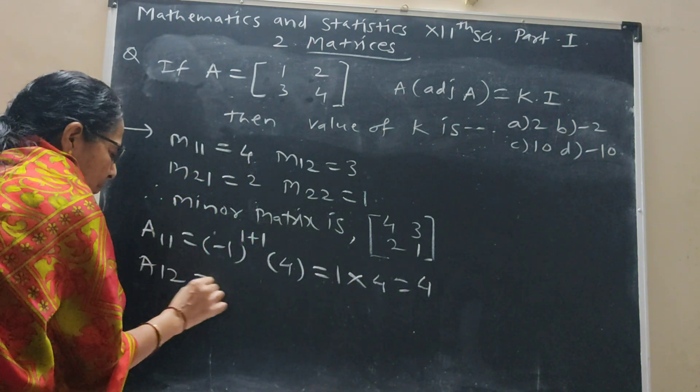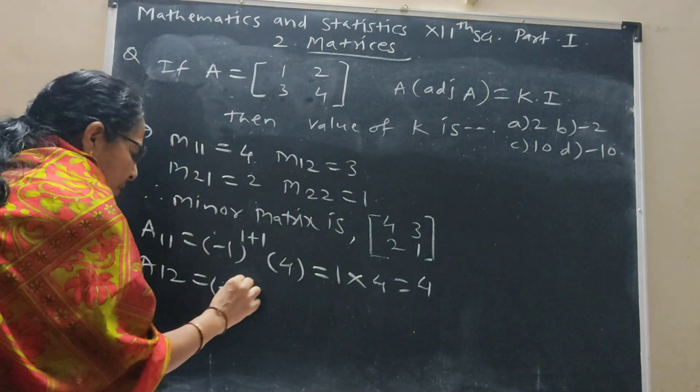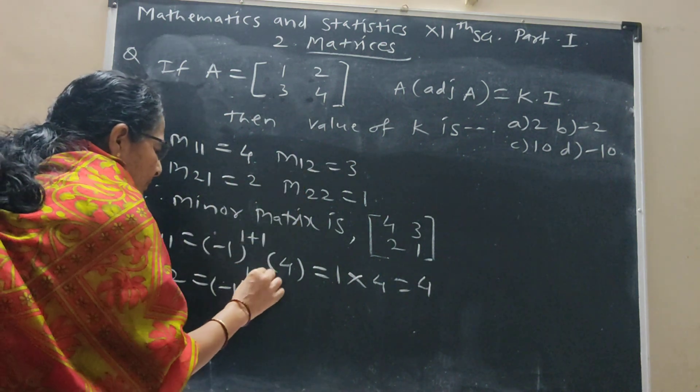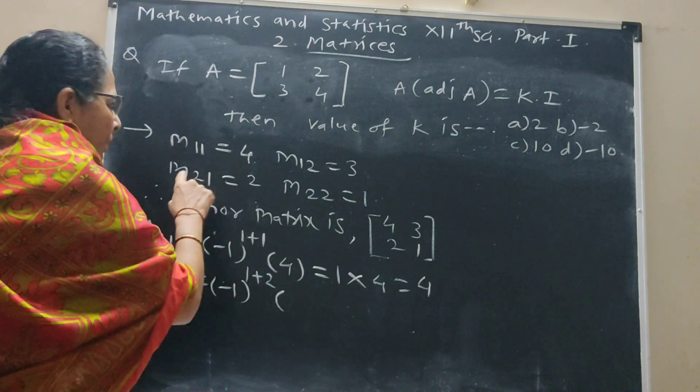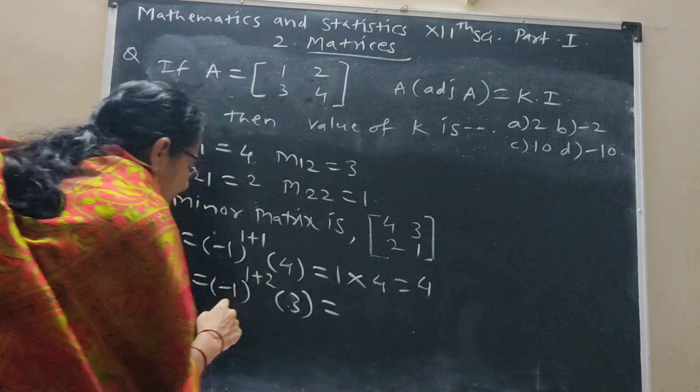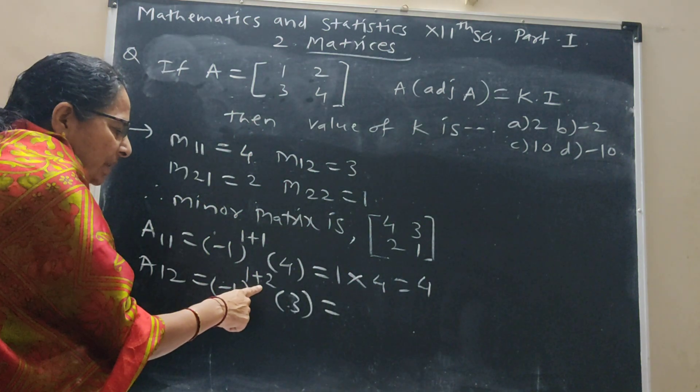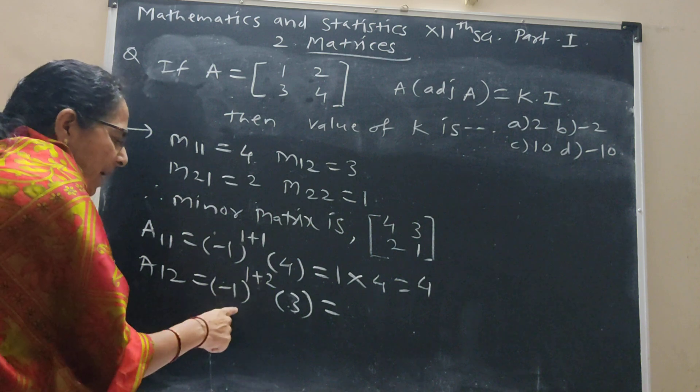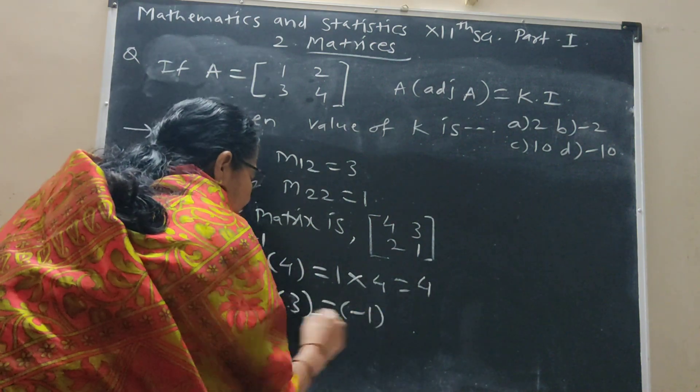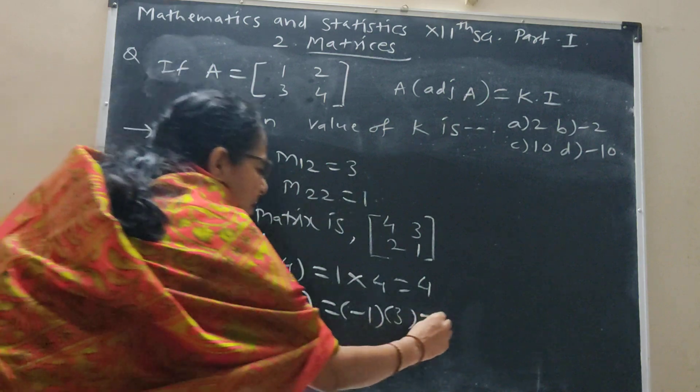So, A_1,2, (-1) raised to 1 plus 2, with respect to minor 3. Minus to the power 1 plus 2 is 3, which is odd in this case. So, I will use minus 1, so -1 into 3, product is -3.